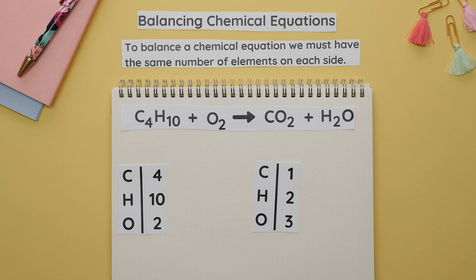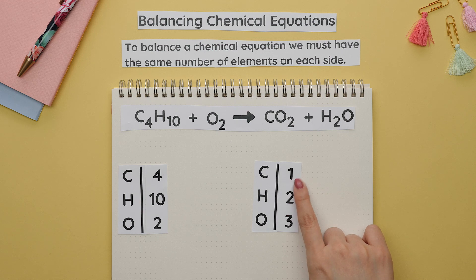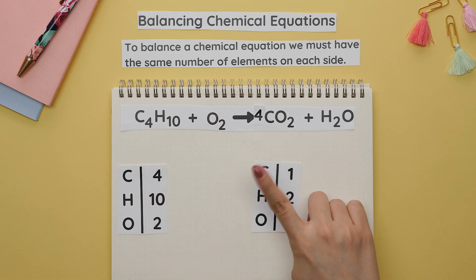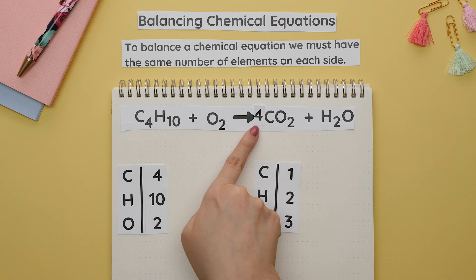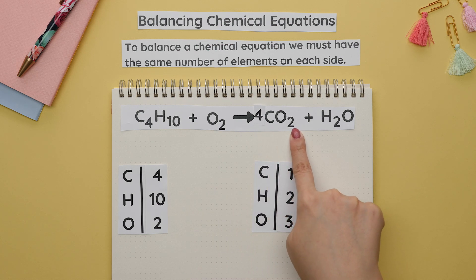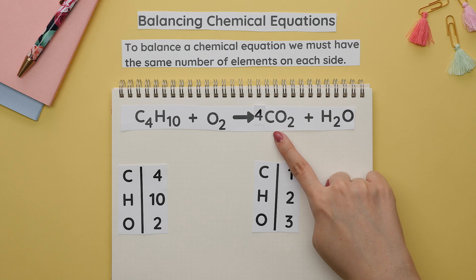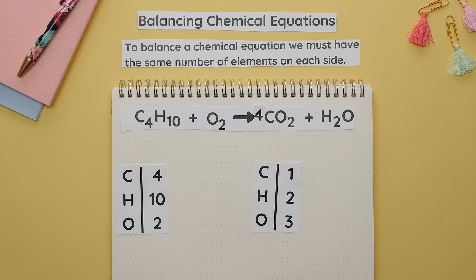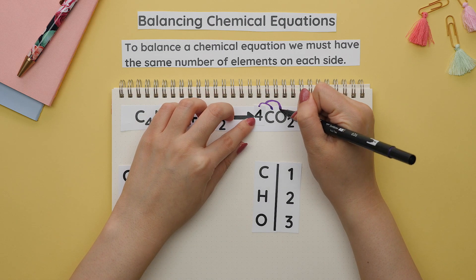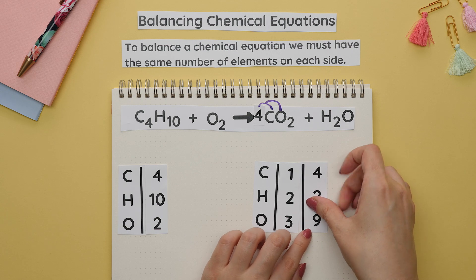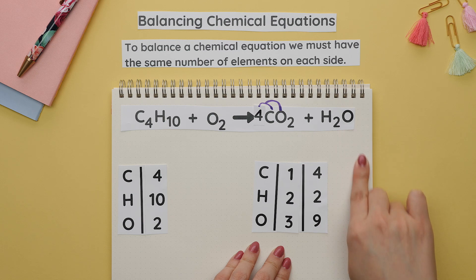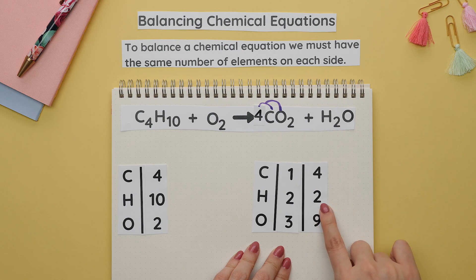We'll start with balancing the carbons — we want four carbons on each side. We make the product side four by placing a coefficient of four in front of the CO2. We are not allowed to break molecules or compounds apart; always place the coefficient in front of the entire compound. Now that something changed, we recount: it is like distributing the four to both elements, giving us four carbons and four times the two subscript, which is eight oxygens. Adding the additional oxygen gives nine total oxygens, while the hydrogen count stays the same.